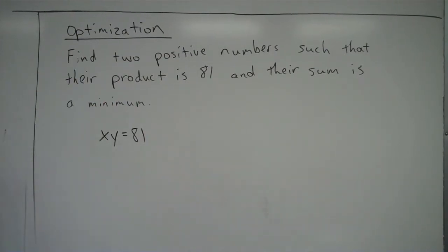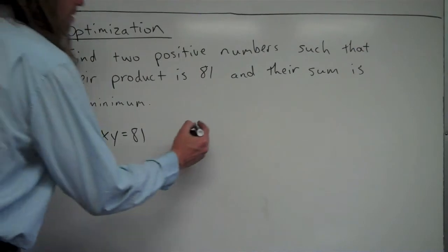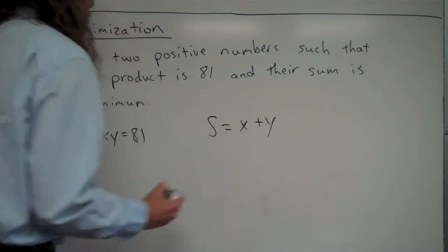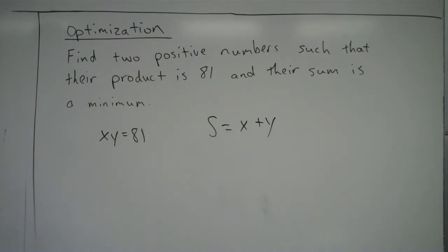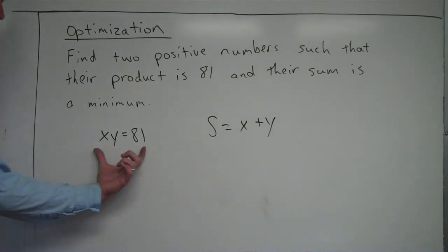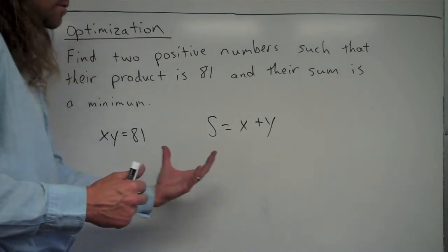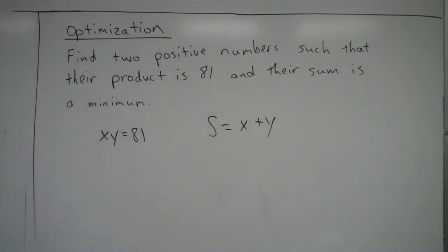So in this case, it's optimization. It could be looking to find the minimum or maximum. In this case we're looking to find the minimum of the sum. So the sum of these two numbers would be S is equal to x plus y. So you're always going to have two equations. You have a constraint equation and your optimization equation, which is the equation that you're either looking to find the minimum or the maximum of.